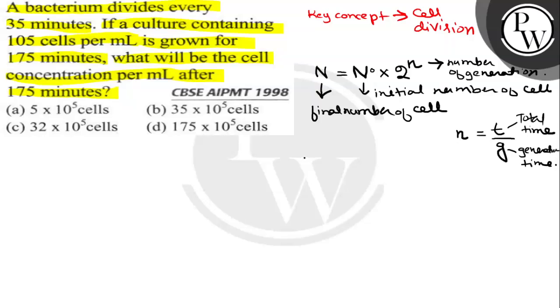Now let's look at the question. We have to find small n first. Here in the question it's given that total time taken for 10 to the power 5 cells to grow in a culture is 175 minutes, and generation time, that is the time required by the bacteria to divide, is 35 minutes. So if we cancel this, n is coming out to be 5, that means 5 generations.